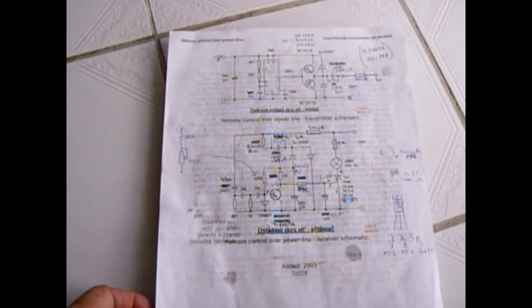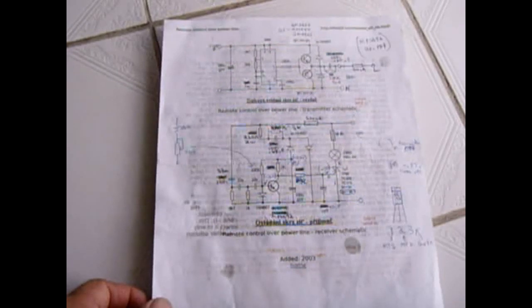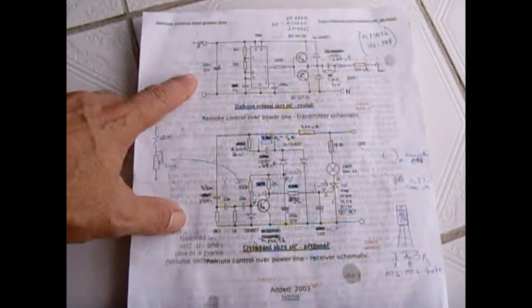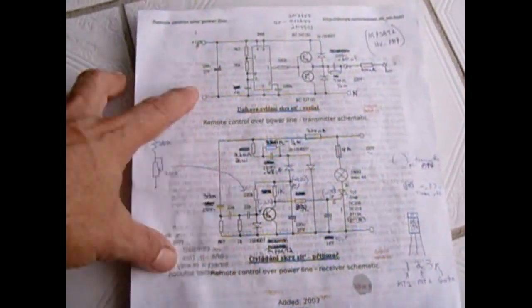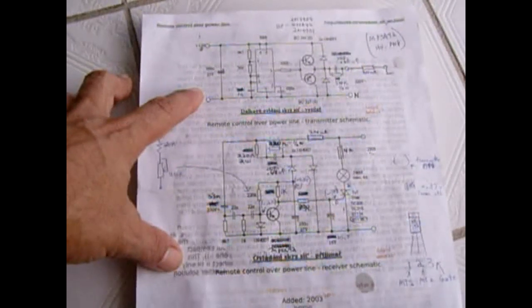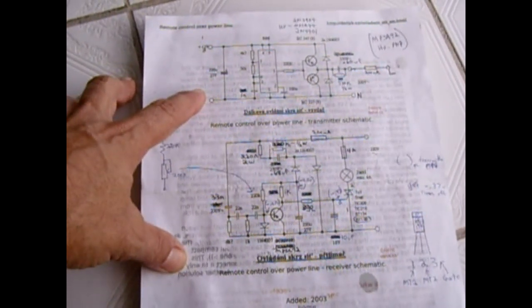In this video I'm going to show you another very useful circuit. As my subscribers know, I like to choose very interesting and useful circuits, and this is certainly one of them. This circuit consists of two parts: a transmitter and a receiving unit. It's a remote control that can be used over AC power lines.